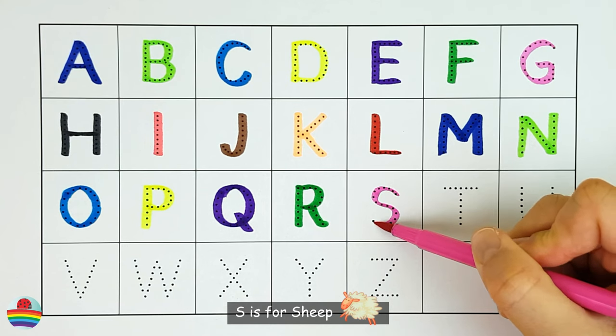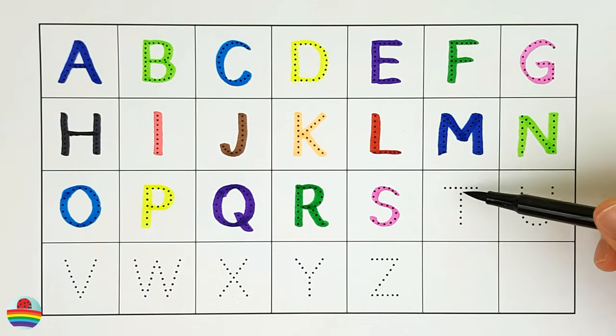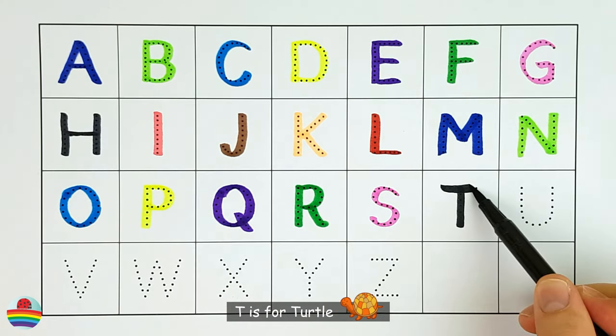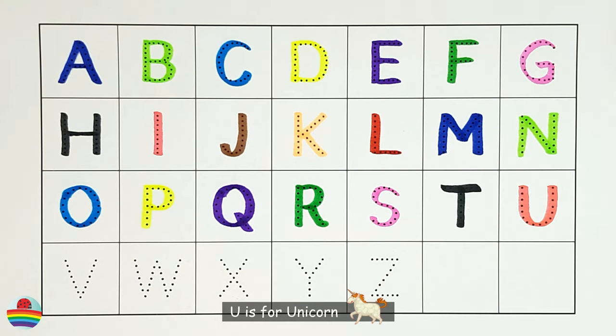S. S is for sheep. S. T. T is for turtle. T. U. U is for unicorn. U.